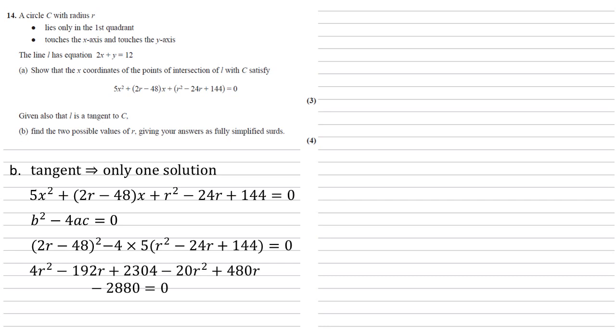Expanding these, we get 4r squared minus 192r plus 2304 from the first part minus 20r squared plus 480r minus 2880, and that's still equal to 0. Collecting like terms, we have minus 16r squared plus 288r minus 576 equals 0. These are all multiples of 16, so let's divide through by negative 16 to make the r squared positive. We end up with r squared minus 18r plus 36 equals 0.